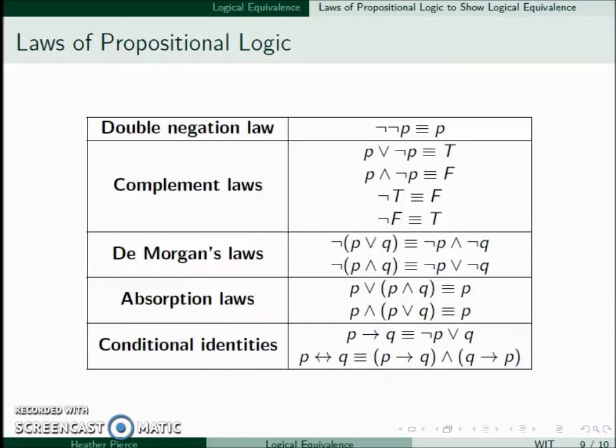We also have the double negation law — the same idea as two negatives canceling each other out: the negation of the negation of P is equivalent to P. The complement laws: P ∨ ¬P is always true, and P ∧ ¬P is always false. In addition, the negation of true is false and the negation of false is true.